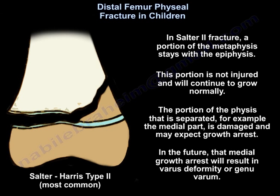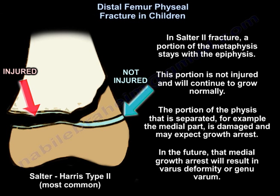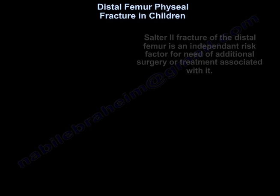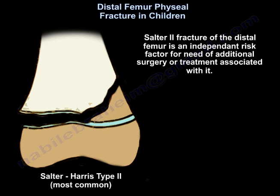In a Salter 2 fracture, a portion of the metaphysis stays with the epiphysis — the physis in this portion is not injured and will continue to grow normally. The portion of the physis that is separated, for example the medial part, is damaged and may experience growth arrest, resulting in varus deformity or genu varum. Salter 2 fracture of the distal femur is an independent risk factor for the need for additional surgery or treatment.